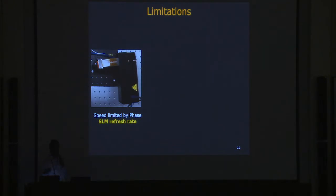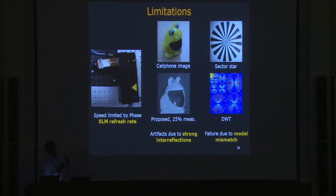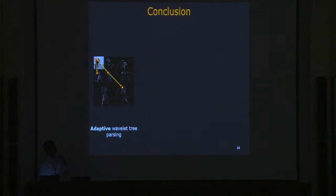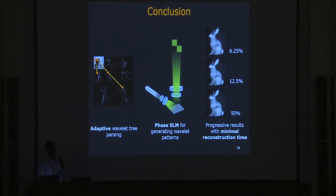This idea comes with some limitations. The speed of imaging is limited by the spatial light modulator — having a faster modulator would overcome this. The second limitation is associated with active illumination: strong inter-reflections cause problems. If the wavelet tree model itself is violated, the sensing strategy does not work. In conclusion, we have proposed an adaptive wavelet tree parsing implementation that is practical using a phase spatial light modulator, leading to progressive reconstruction with minimal reconstruction time.